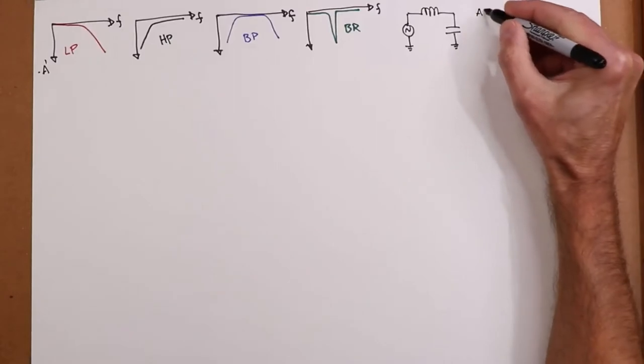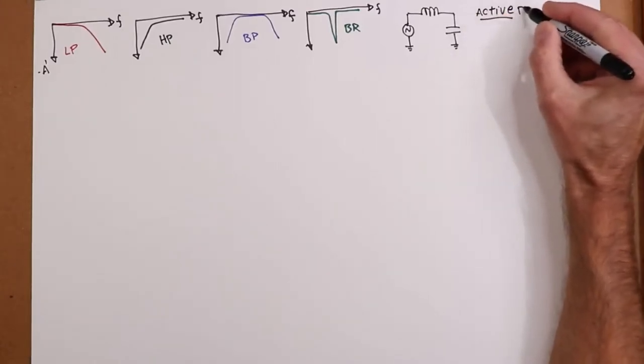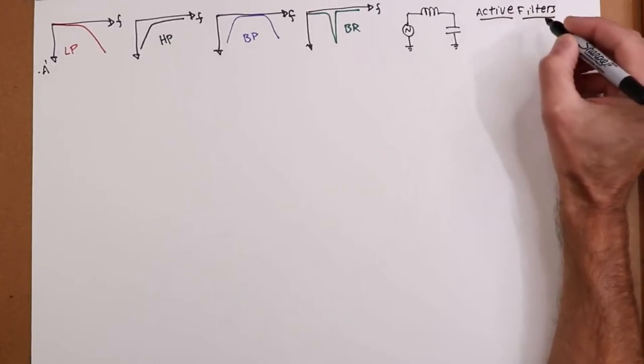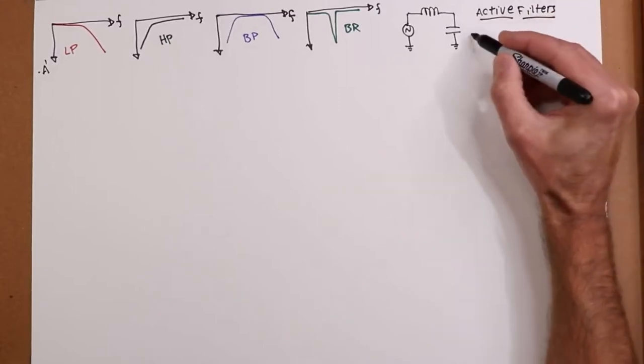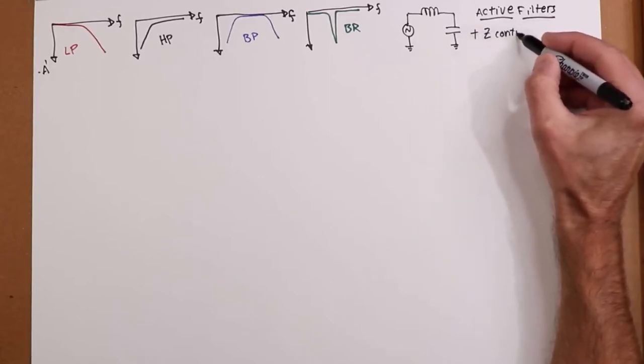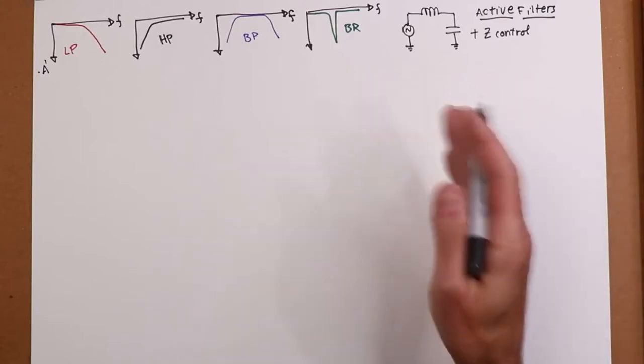Now an active filter has certain advantages over these passives. There are some downsides. So what are the good things? Well, we have impedance control. Now, having control of the impedance does certain things for us. For example, we'll be able to cascade a series of these networks together to make very complicated responses. And there's little interaction between them.